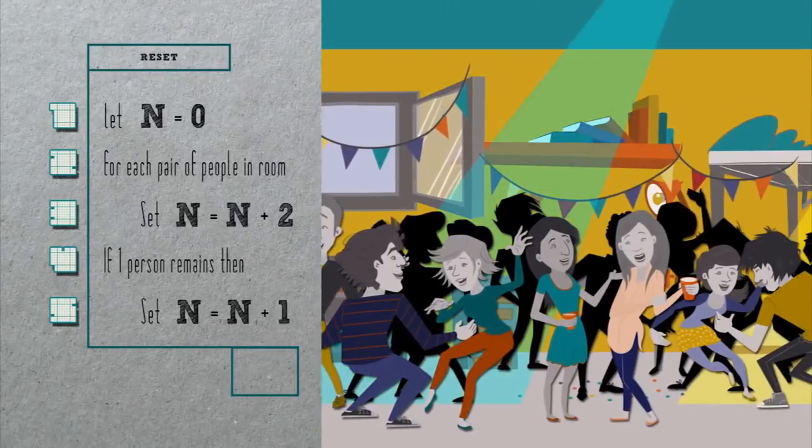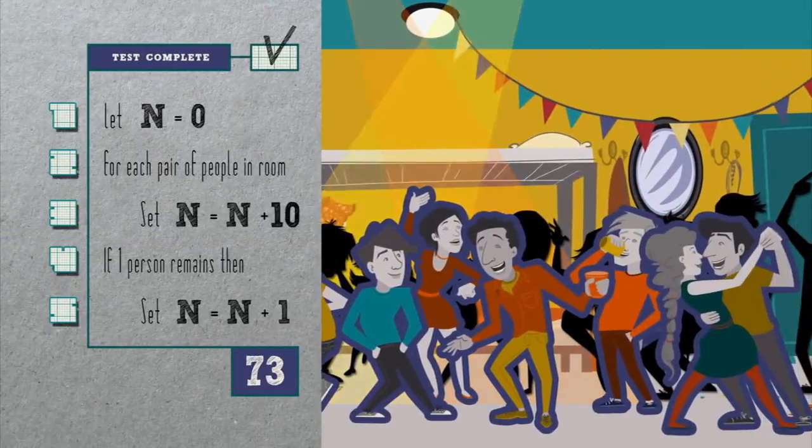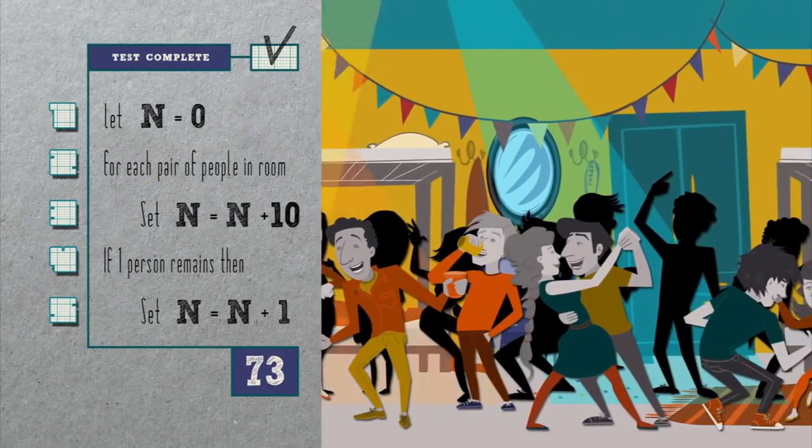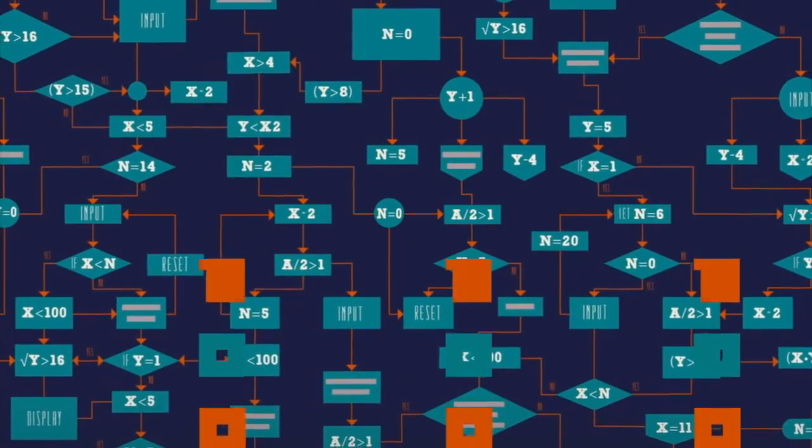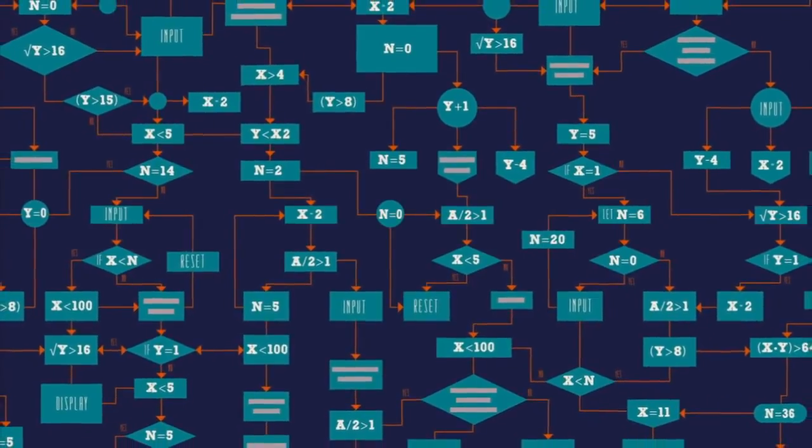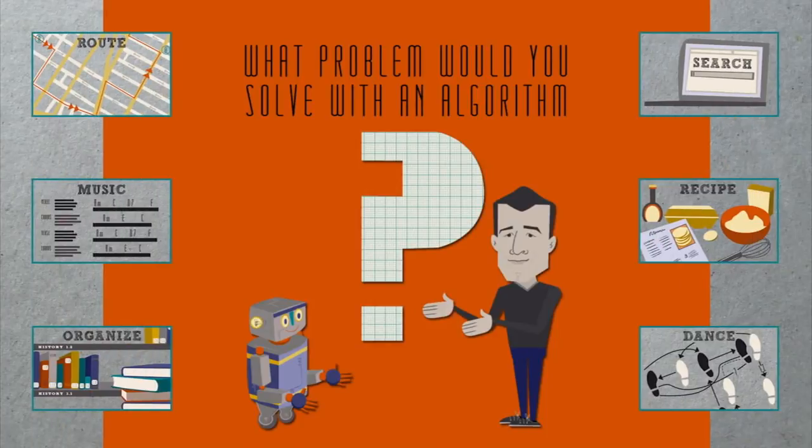Can we do even better? Well, we could count in threes or fours or even fives and tens, but beyond that, it's going to get a little bit difficult to point. At the end of the day, whether executed by computers or humans, algorithms are just a set of instructions with which to solve problems. These were just three. What problem would you solve with an algorithm?